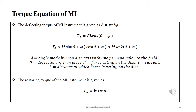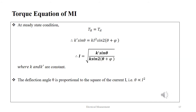F is the force acting on the disc, I is the current flowing through the conductor, and L is the distance at which force is acting on the disc. The restoring torque of the MI equipment is given as TR equals K'·sin θ. At steady state condition TR equals TD. Therefore, K'·sin θ equals K·I²·sin(2θ + φ). Thus, we get I equals the square root of K'·sin θ divided by K·sin(2θ + φ), where both K and K' are constants. The deflection angle θ is proportional to the square of the current, that is θ ∝ I².